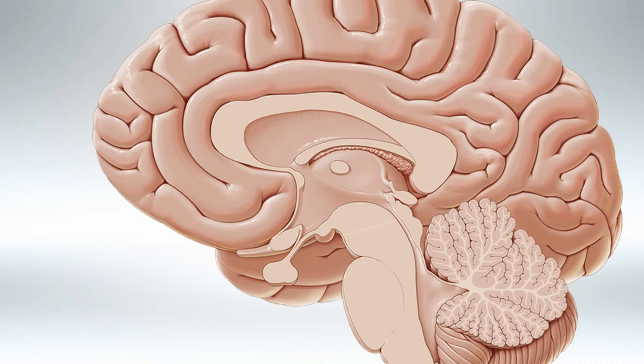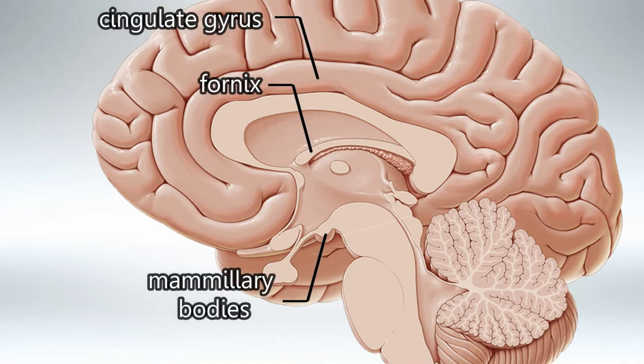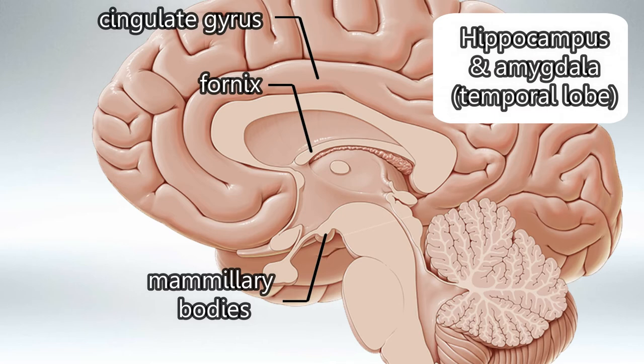In the middle of the brain, we have the cingulate gyrus, the fornix, and mammillary bodies. And in the temporal lobe, we have the hippocampus and amygdala. Controversially, some people say that the thalamus and hypothalamus are also part of the limbic system.